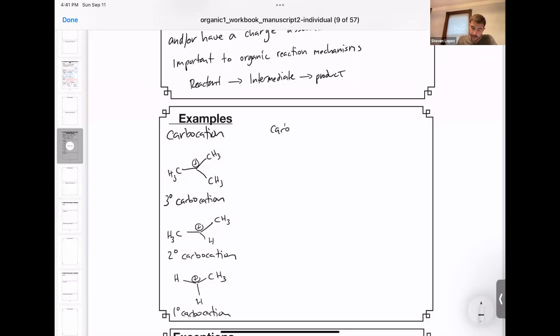A carbanion is very much like a carbocation, but now instead of having a positive charge, you have a negative charge. So this is an example of a tertiary carbanion. You can also have secondary carbanions and primary carbanions.